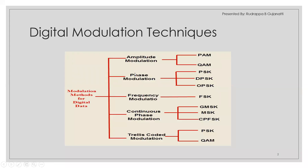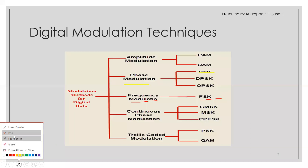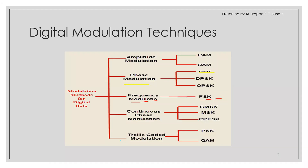Just as in analog modulation we have AM, FM, and PM, similar modulation techniques exist in digital modulation. In digital modulation we have amplitude modulation, phase modulation, and frequency modulation. For the digital aspect, we use ASK for amplitude shift keying, FSK for frequency shift keying, and PSK for phase shift keying. Apart from these, TDM — time division multiplexing — is not actually modulation; it is a multiplexing technique. We'll be discussing all of these.